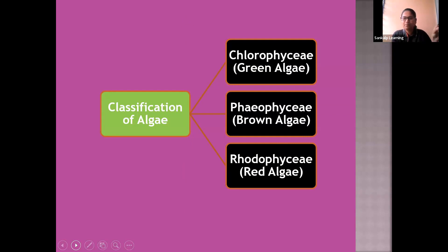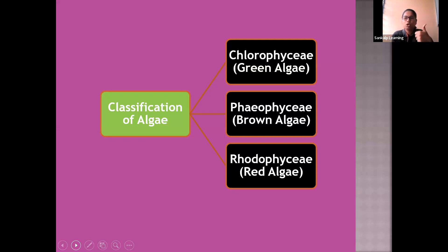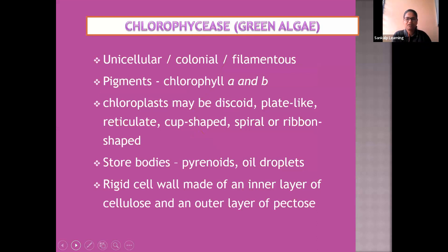Based on dominant pigment, the algae has been divided into Chlorophyceae, Phaeophyceae, and Rhodophyceae. In Chlorophyceae, 'chloro' indicates that chloroplast will be present along with chlorophyll A and B. So the dominant pigments are chlorophyll A and B.